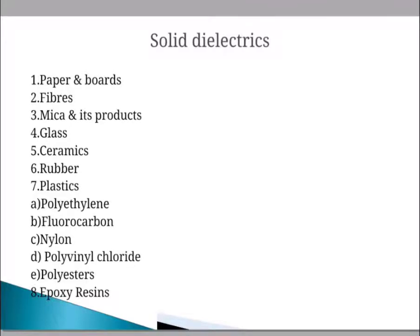Glass is used as a cover and for internal support in electric bulbs, electronic valves, mercury arc switches, X-ray equipment, capacitors, and as insulators in telephones. Ceramic is an inorganic material produced by consolidating minerals into monolithic bodies by high-temperature heat treatment. Ceramics are divided into two groups: low permittivity ceramics used as insulators, and high permittivity ceramics used in capacitors and transducers.